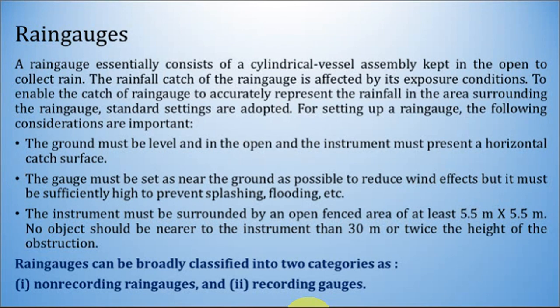Rain gauges can be broadly classified into two categories: non-recording rain gauges and recording rain gauges. All these aspects for setting up a rain gauge station are very important because accuracy of data is obtained only when all these standards are met. One must ensure that installation of a rain gauge at the station will meet these criteria.